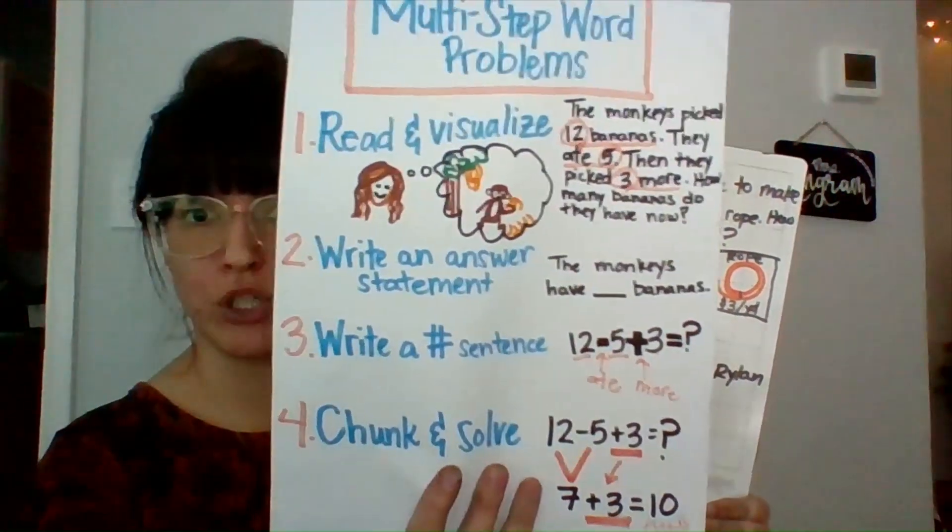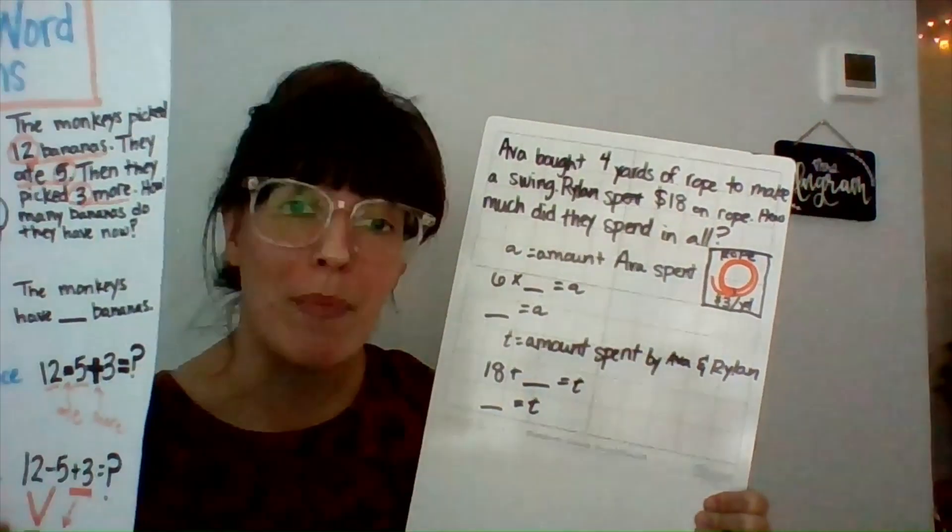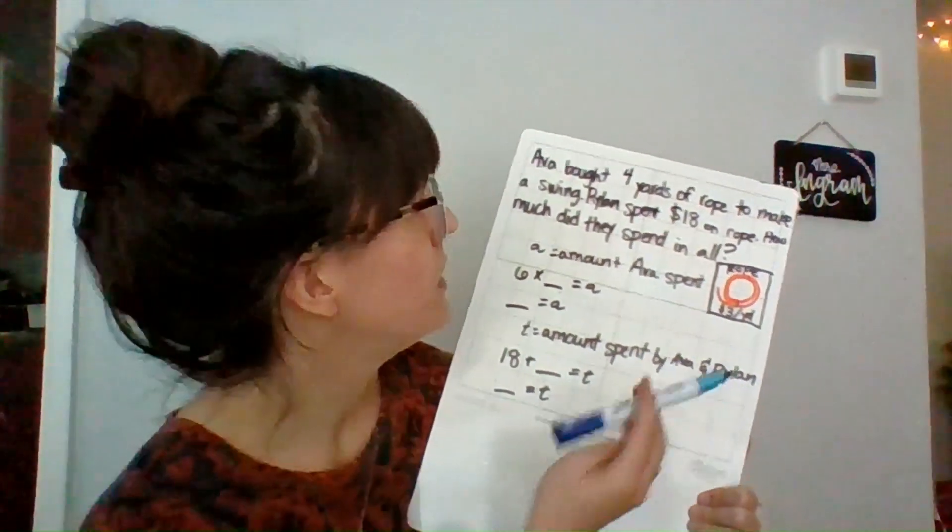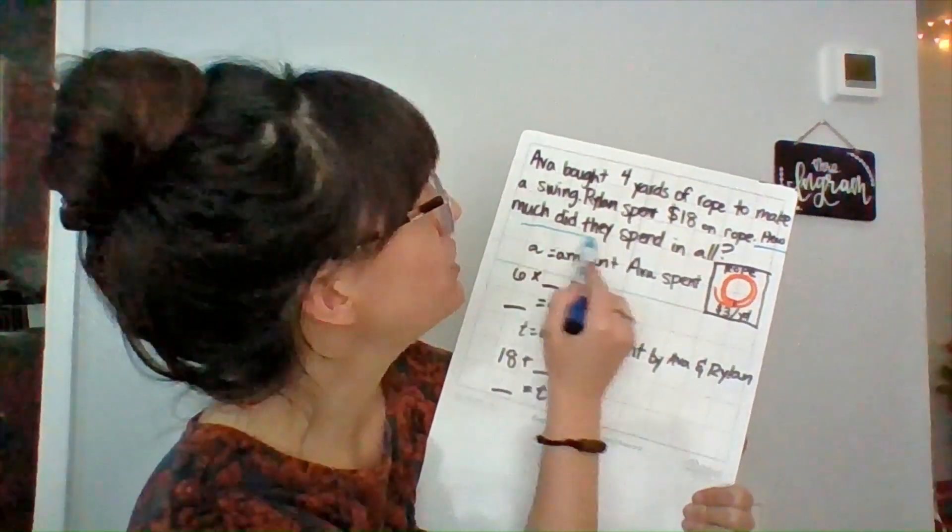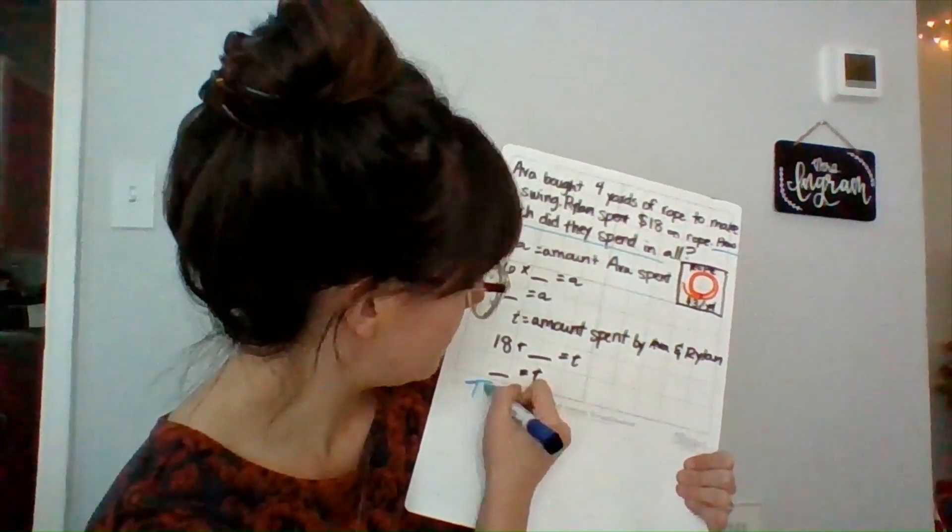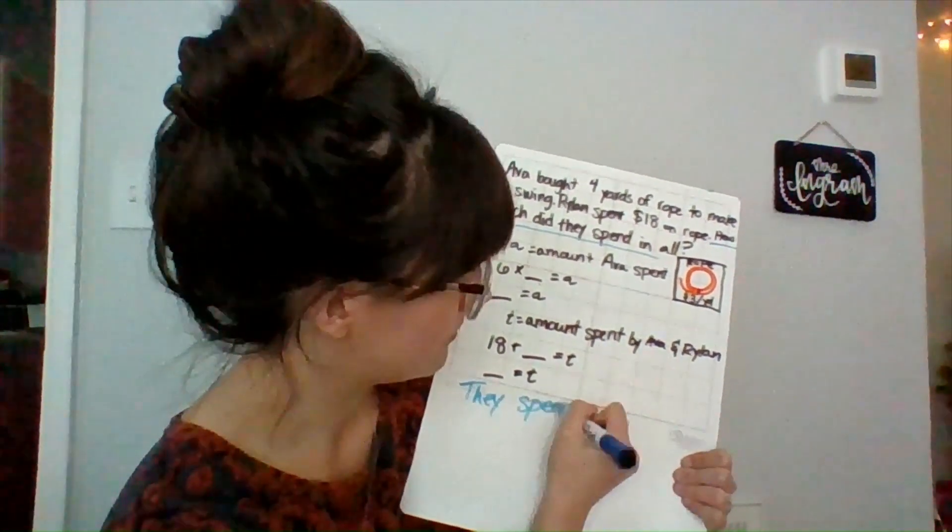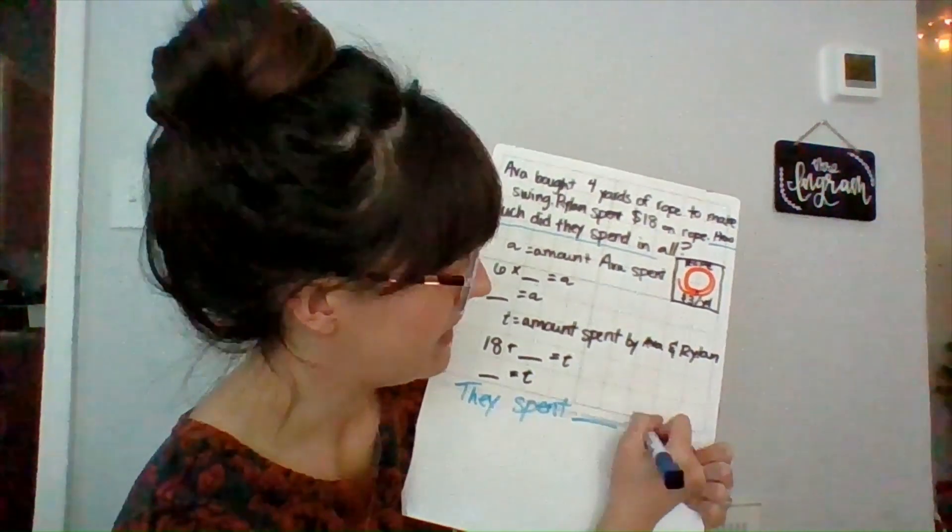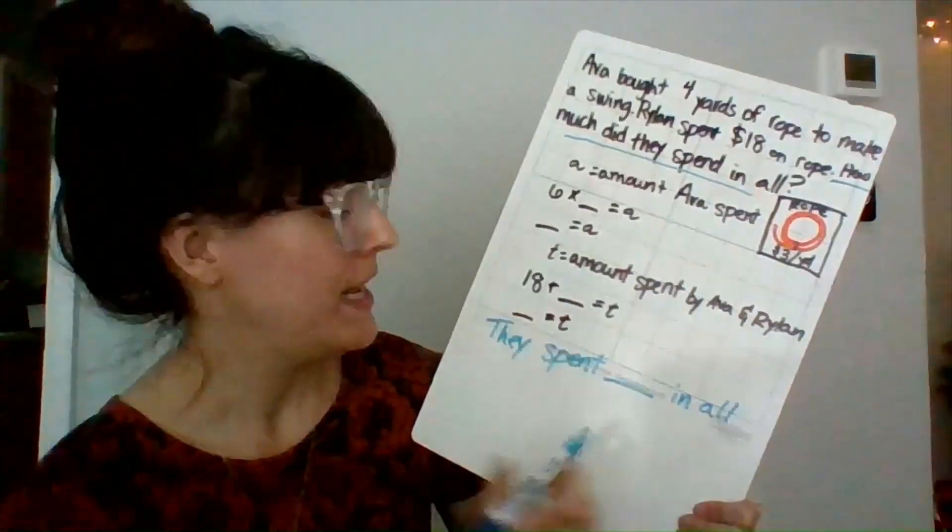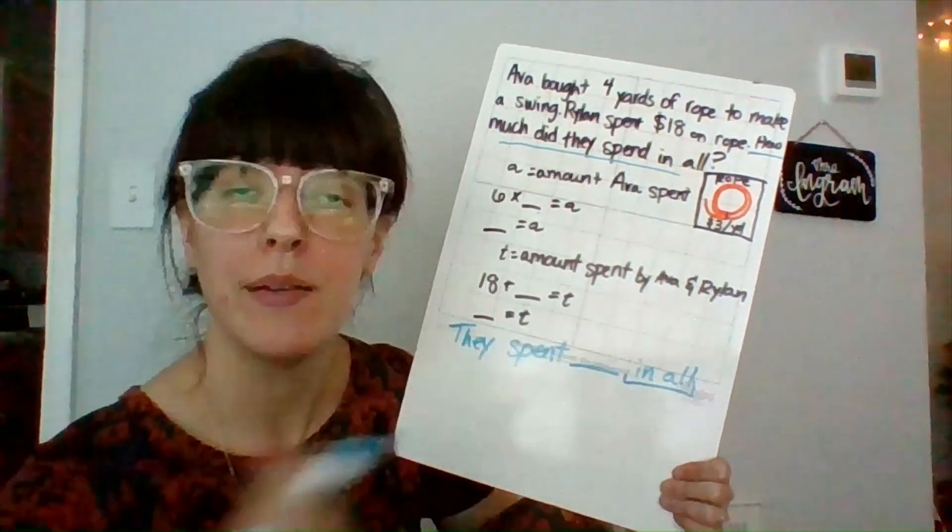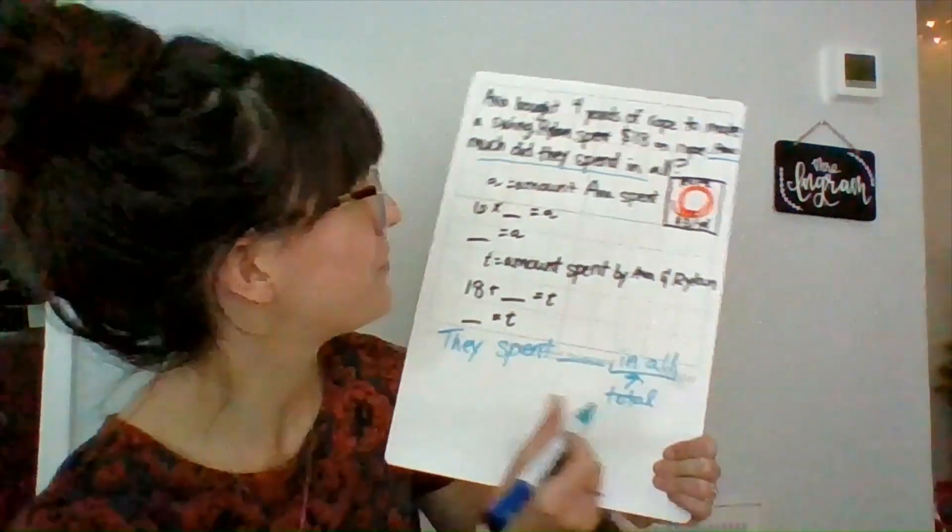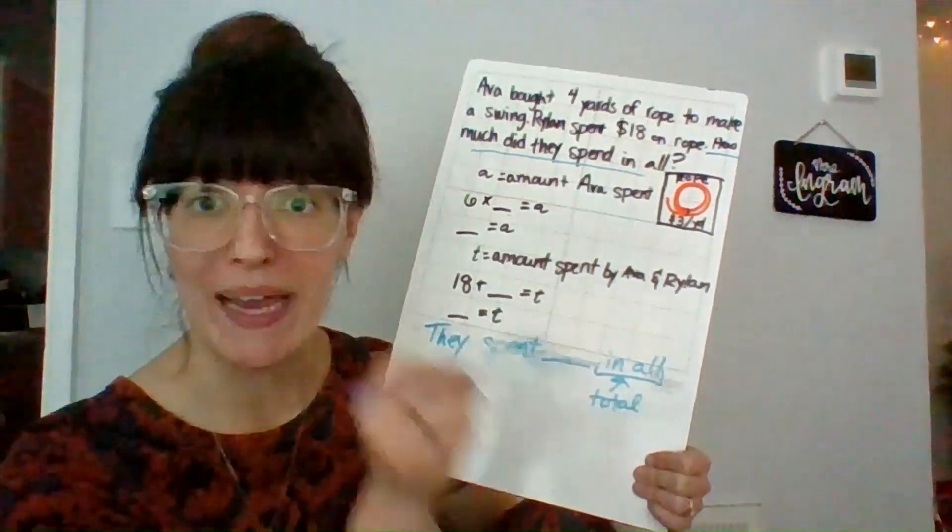Now, step two, I'm going to come up with my answer statement. Okay, so what would an answer to this problem look like? The question is how much did they spend in all? So I guess it would be they spent blank in all. So I know I'm looking for a total amount because in all means total. So I'm going to be figuring out how much they spent together.